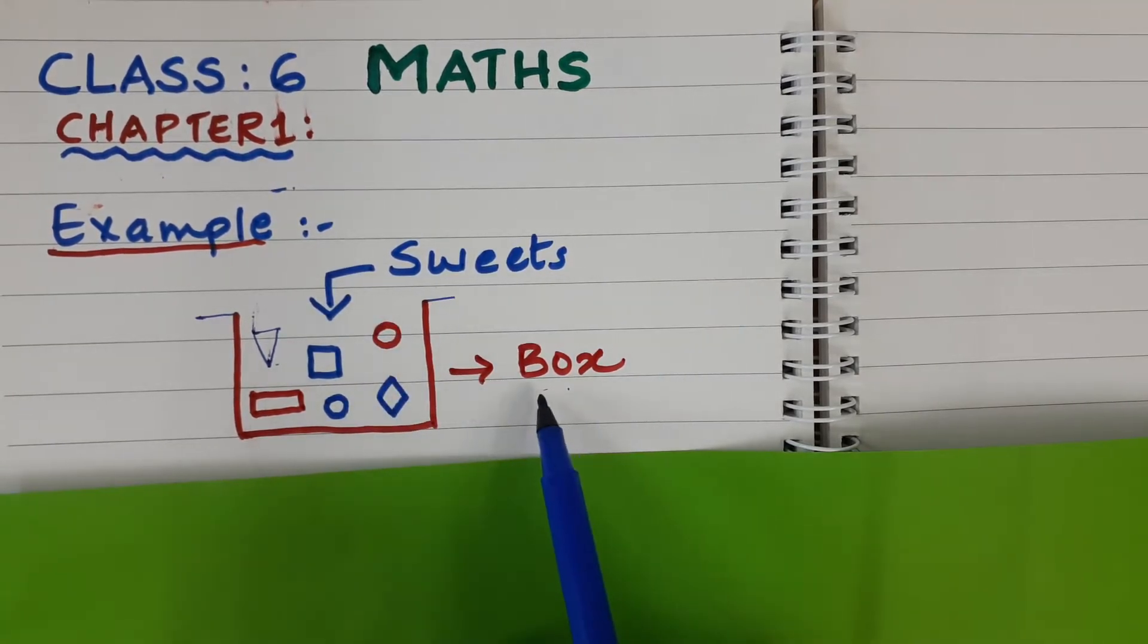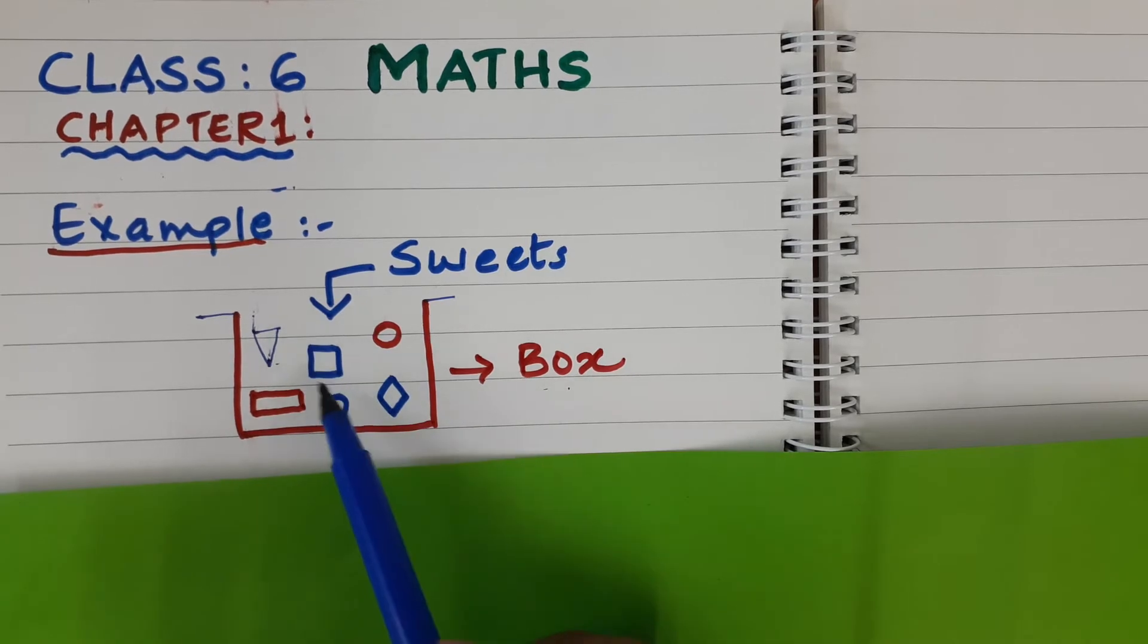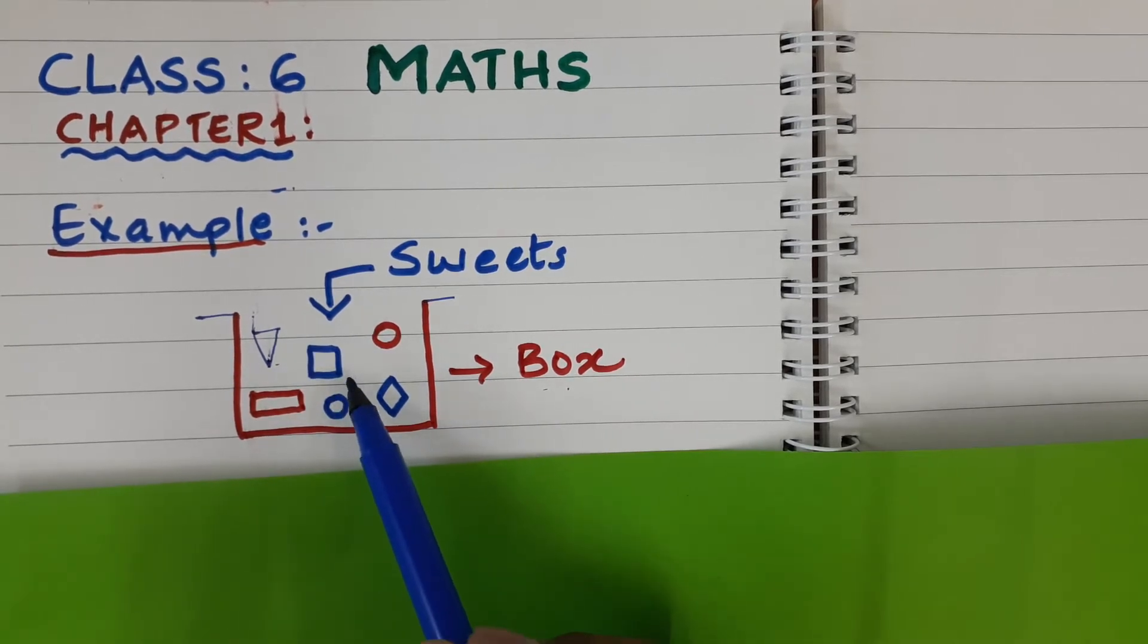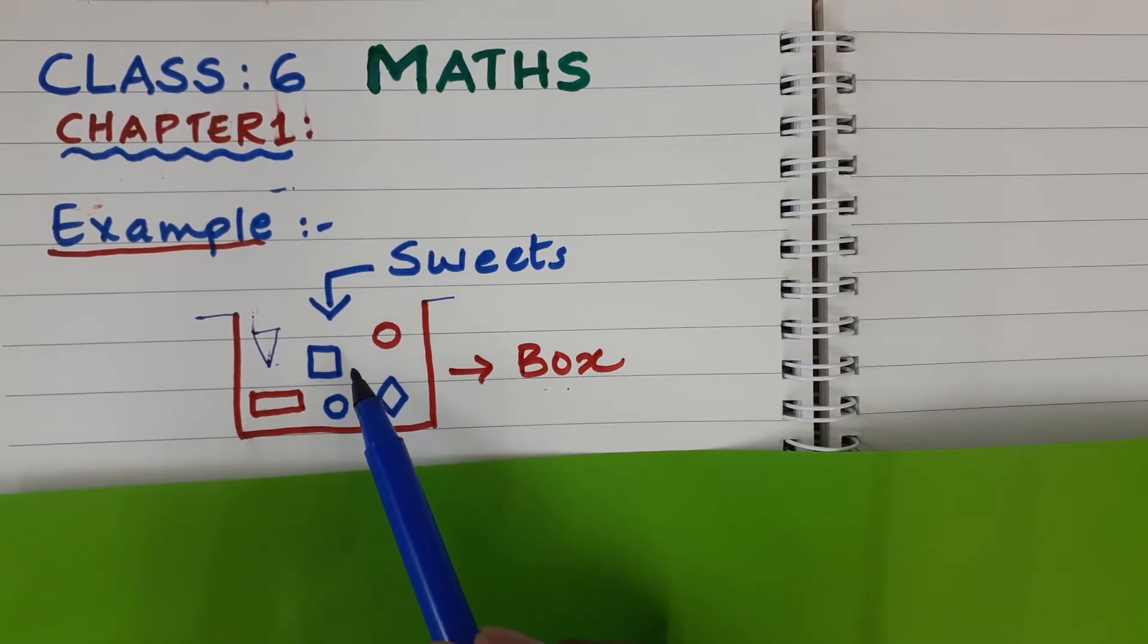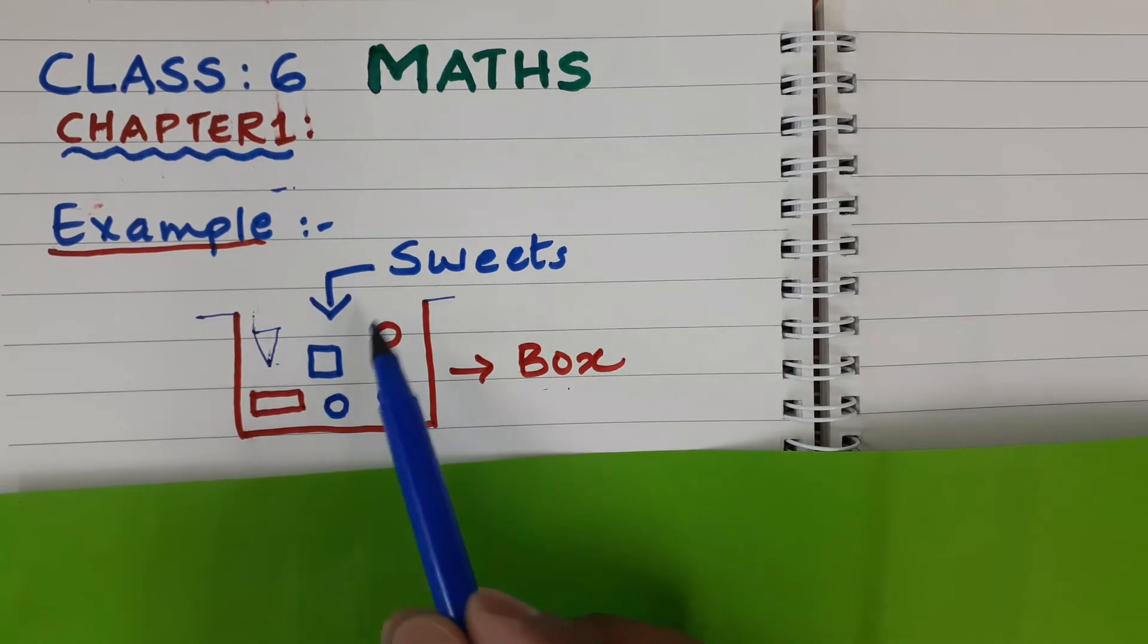Here, some sweets are kept in a box. Can you count how many sweets are there in this box without using numbers like 1, 2, 3? You should not use numbers. Can you count all these sweets?